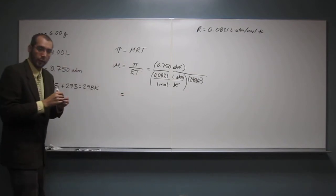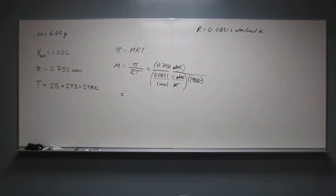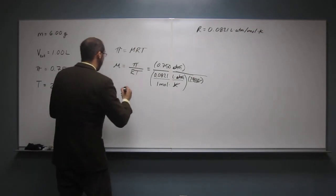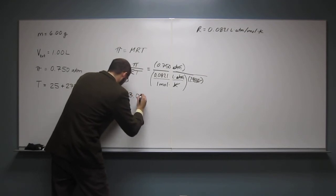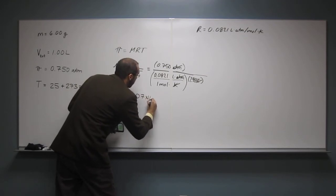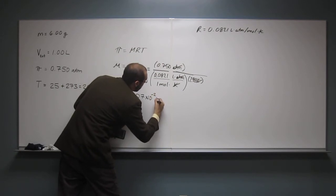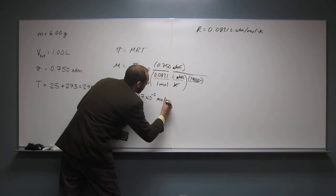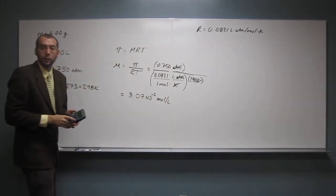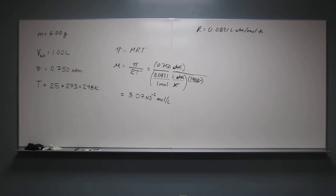Okay, so now let's just get on our calculators and solve this part of the problem. So 0.75 divided by 0.0821, multiply that by 298. And I get a molarity of 3.07 times 10 to the negative 2 moles per liter. Okay, so let's just keep it like that. It'll be easier for us.